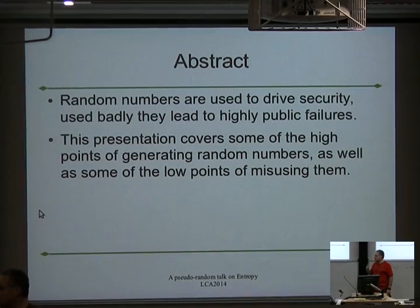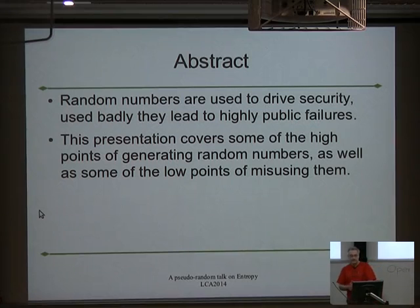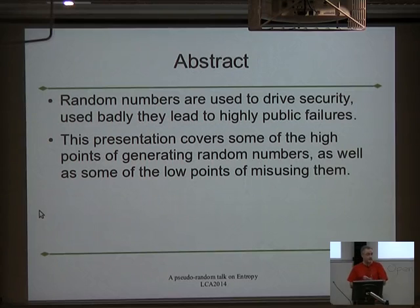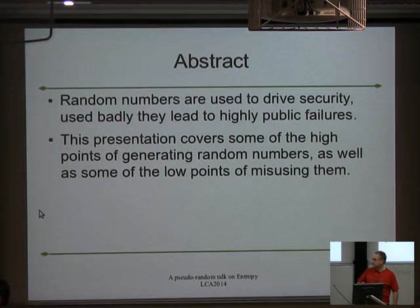So that's just the abstract that I put up on the talk earlier. Random numbers are used all over the place, mostly crypto failures. I was just going to have a quick run through some of the stuff about them that I knew, a whole bunch of stuff that I didn't know. I'm trying to cover it wide and not go too fast.